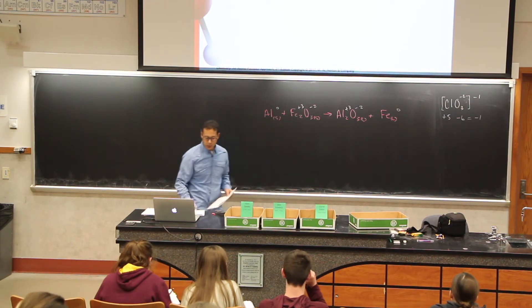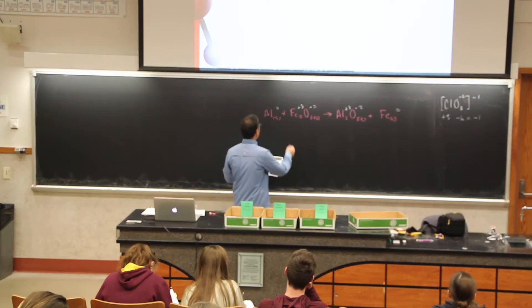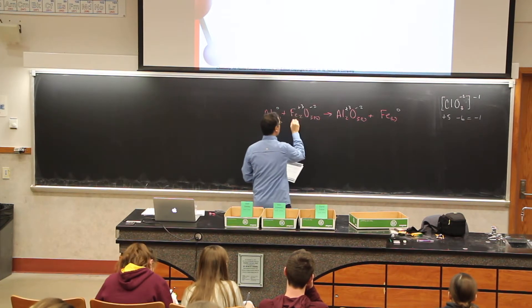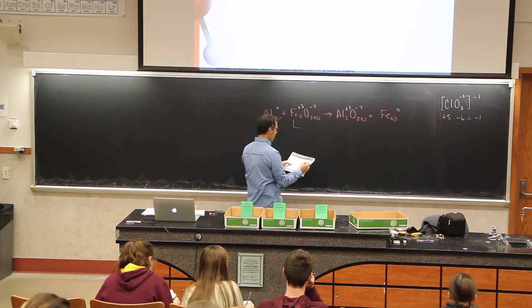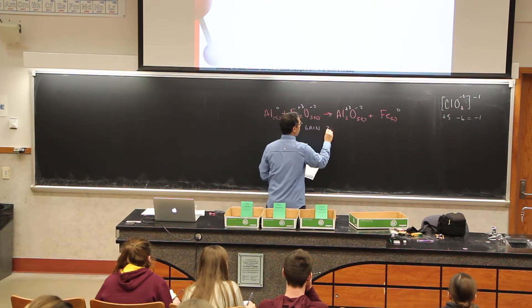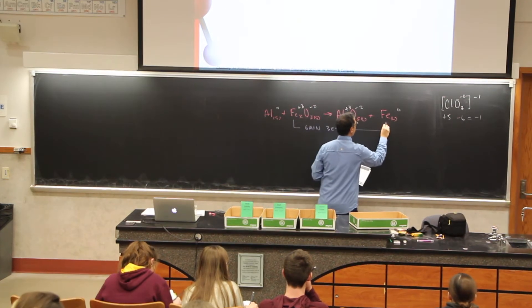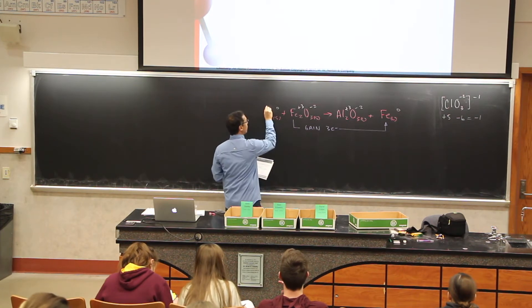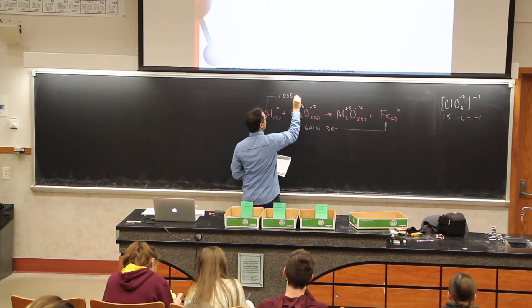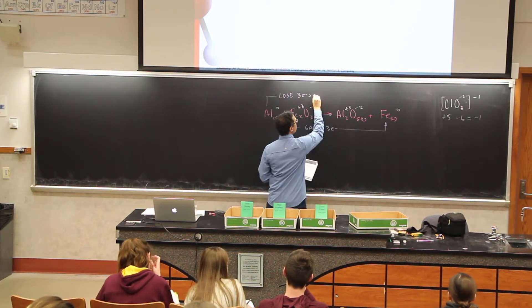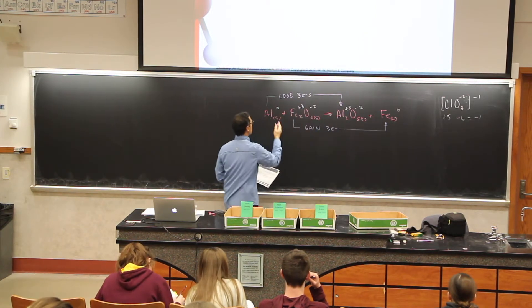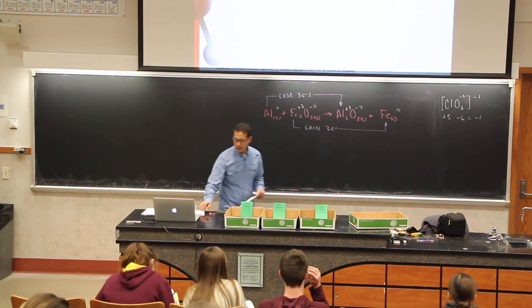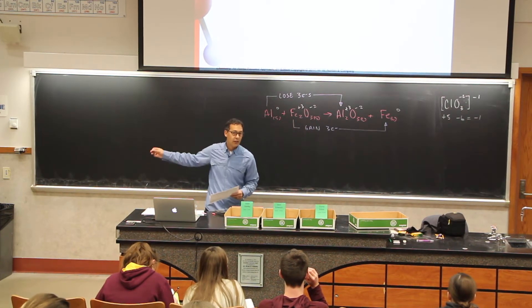Now in this reaction, what's been oxidized, what's been reduced? As we look at this we can see here aluminum, its charge goes up, and iron, its charge goes down. So we would say here that our iron is going to gain three electrons as it goes here, see it goes from a plus three to a zero, so it added three negative charges.